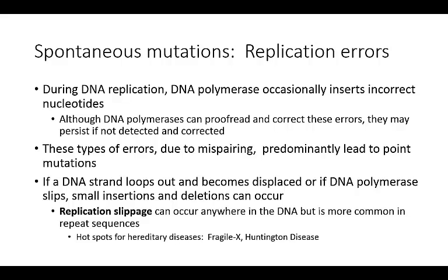Spontaneous mutations typically arise due to replication errors. During DNA replication, DNA polymerase is pretty good, but it will occasionally insert incorrect nucleotides. Although we have DNA polymerases which can proofread and correct these errors, they can persist if the cell is not able to detect and correct them. These types of errors are usually due to mispairing and usually lead to point mutations.